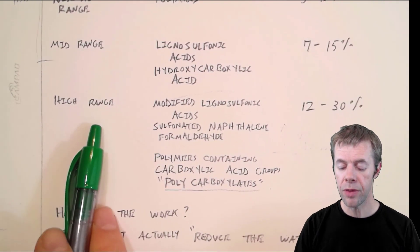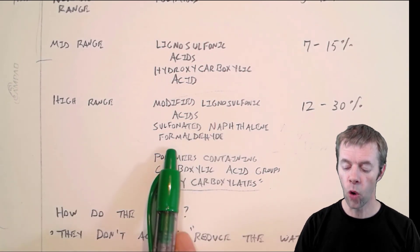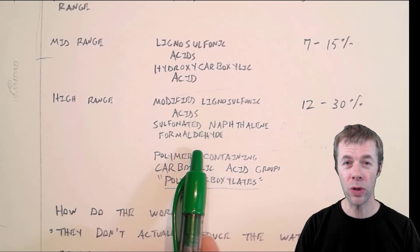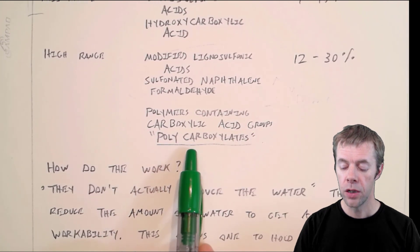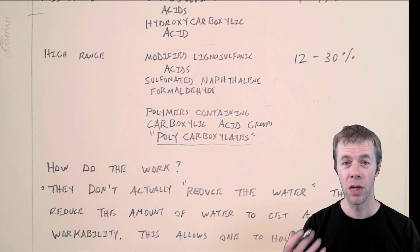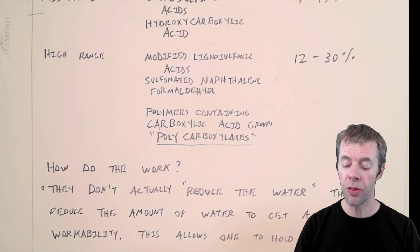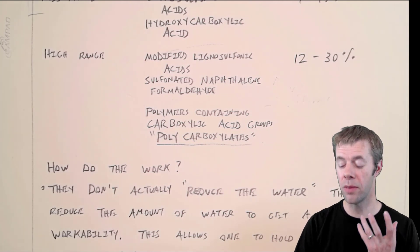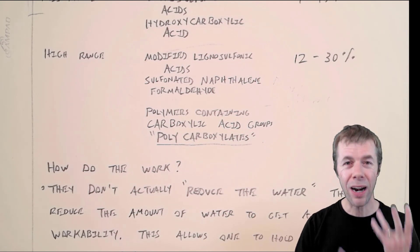Then they moved into high range. Modified lignins, sulfonated naphthalene formaldehydes - these were kind of popular in the early 90s. And then the industry now has moved on to polycarboxylates, carboxylated ethers. With these, you can get very high water reductions up to 30%, and they're pretty awesome. They have taken over the industry.